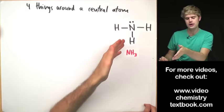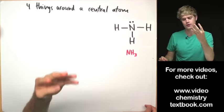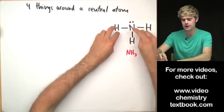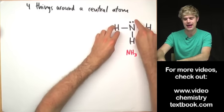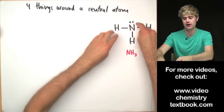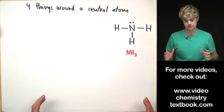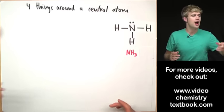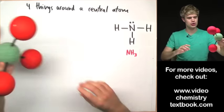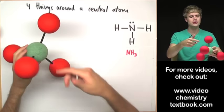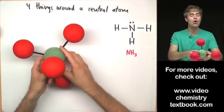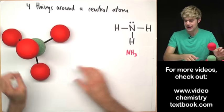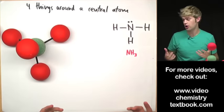NH₃ also has four things around a central atom, but not all of them are bonds to other atoms. We have three bonds and then a fourth thing that's a lone electron pair. So what's its shape going to look like in three dimensions? I'm going to go back to the tetrahedral shape for just a minute, because this is how we arrange four things around a central atom when they're all other atoms. But in NH₃ they're not all other atoms.